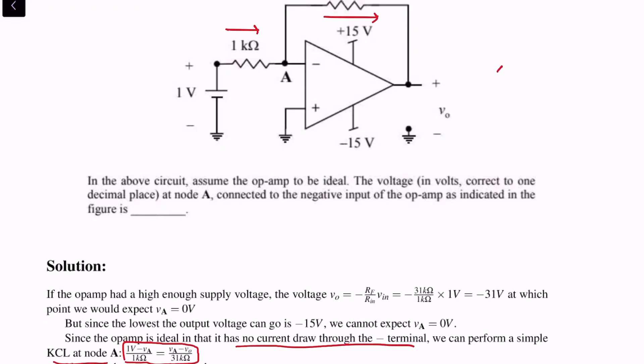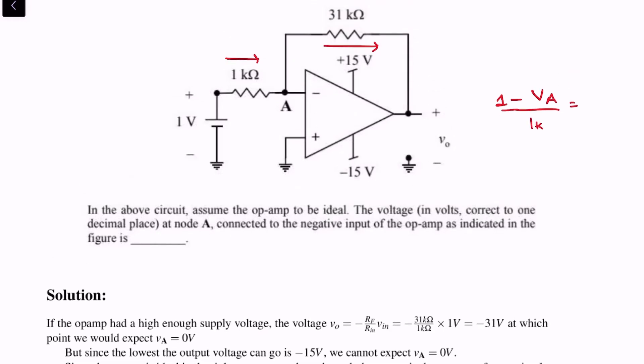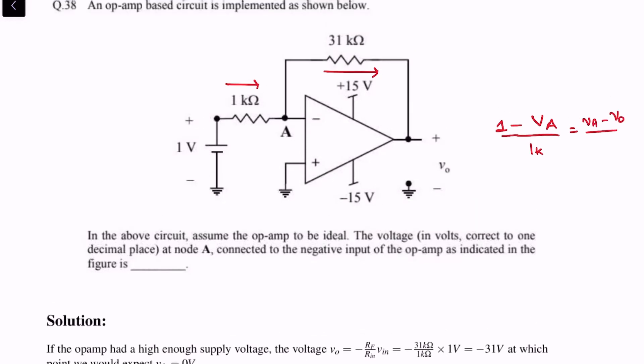So it is simply 1 minus Va by 1 kilo-ohm—that is the current through the left resistor—is equal to Va minus Vout by 31 kilo-ohms.